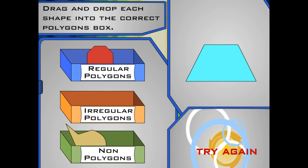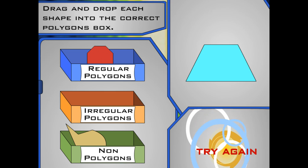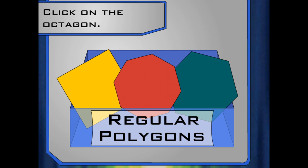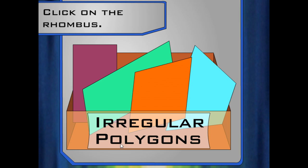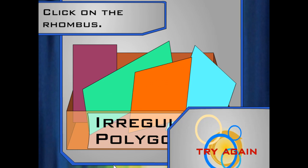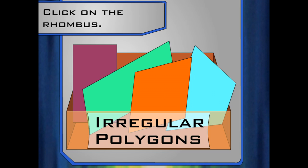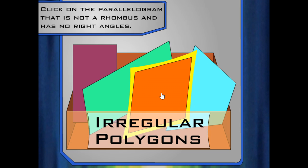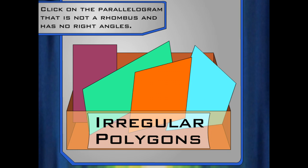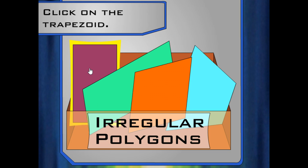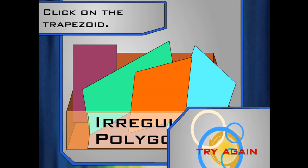Remember, polygons where the sides and angles aren't all the same length are irregular polygons. Remember, an octagon has eight sides. A rhombus has four sides of equal length, but its angles don't have to be right angles. Remember, a parallelogram has two pairs of parallel sides. You're looking for a parallelogram without right angles. Remember, a trapezoid has only one pair of parallel sides.